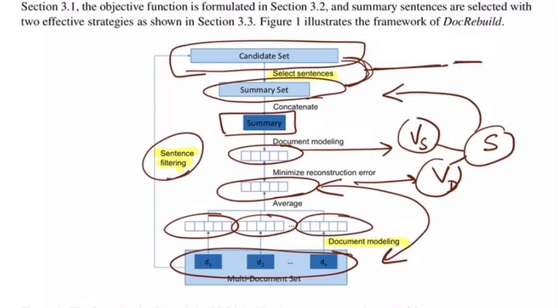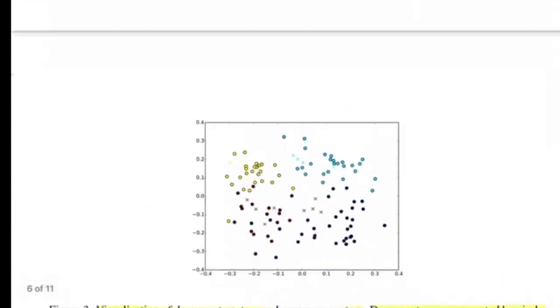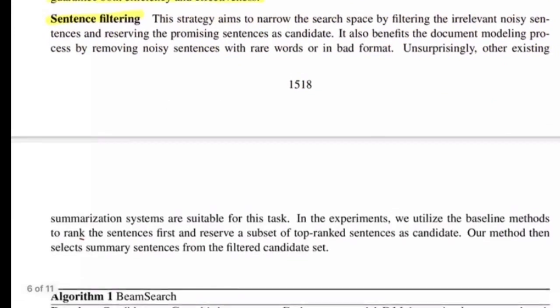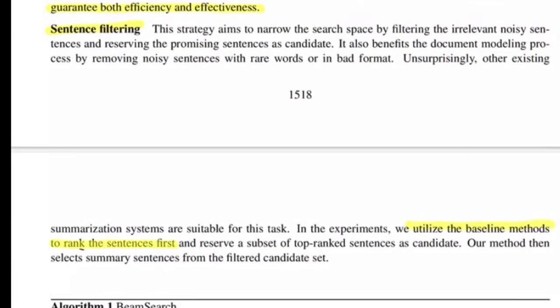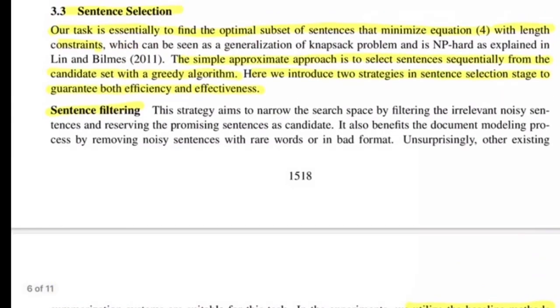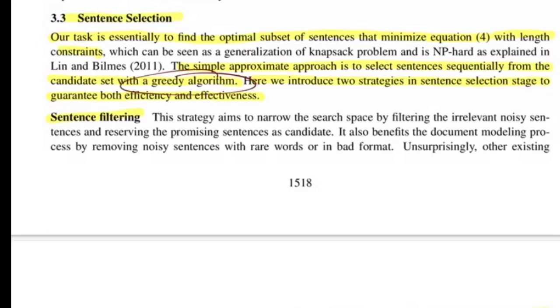For sentence filtering, the authors use a baseline method to rank sentences first and then reserve a subset of top-ranked sentences as candidates. One prominent technique used in baselines is TextRank, a graph-based algorithm that ranks every sentence in a graph; you then arrange them in descending order and select the top K sentences as candidates. Once the candidate set is generated, the authors discuss two techniques to generate the summary set: the greedy algorithm already discussed, and beam search.